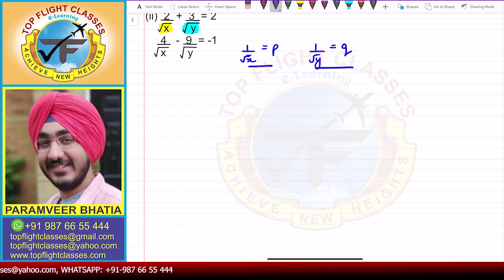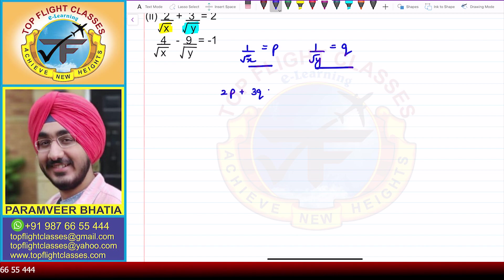With 1 by root x equal to p and 1 by root y equal to q, the first equation becomes 2p plus 3q is equal to 2, and the second equation becomes 4p minus 9q is equal to minus 1.